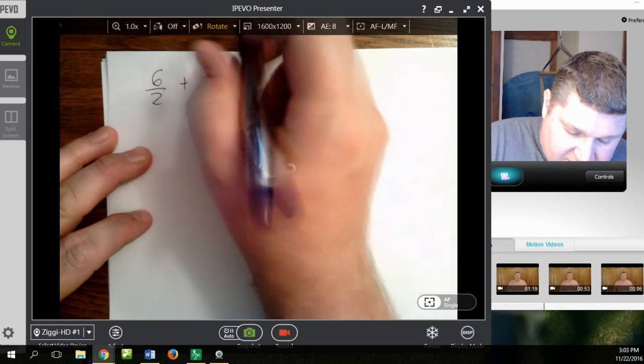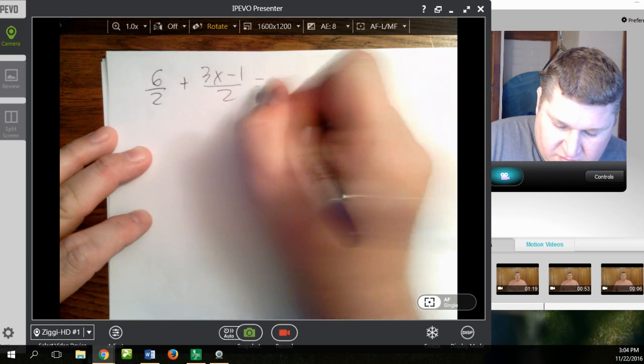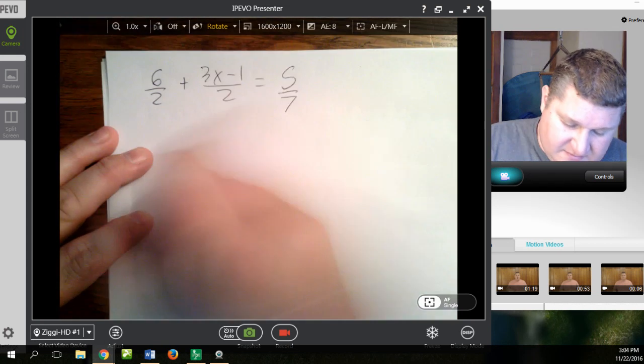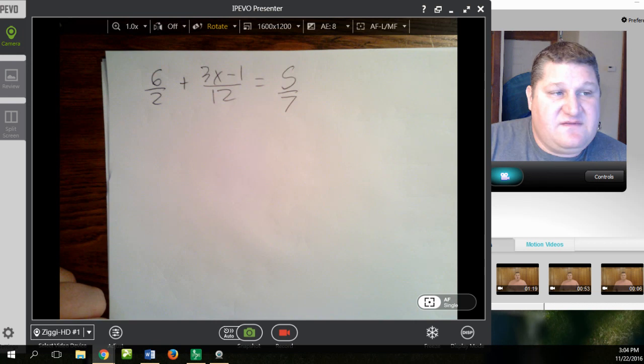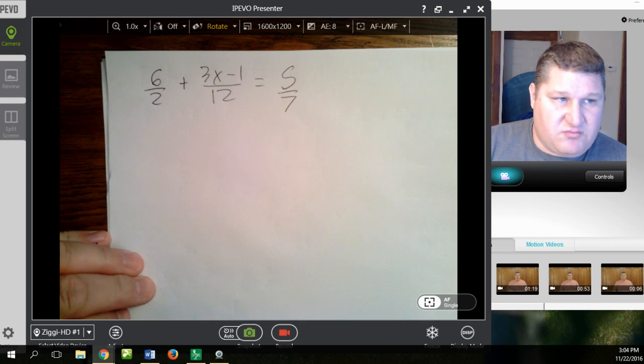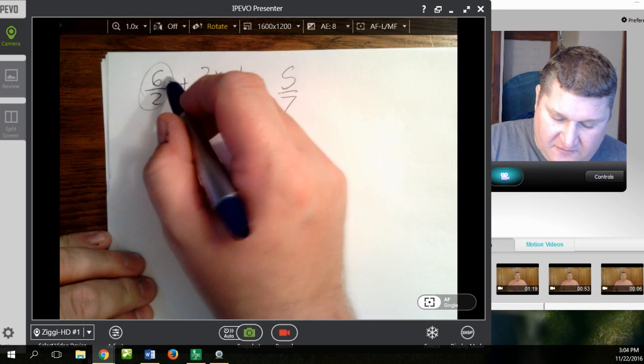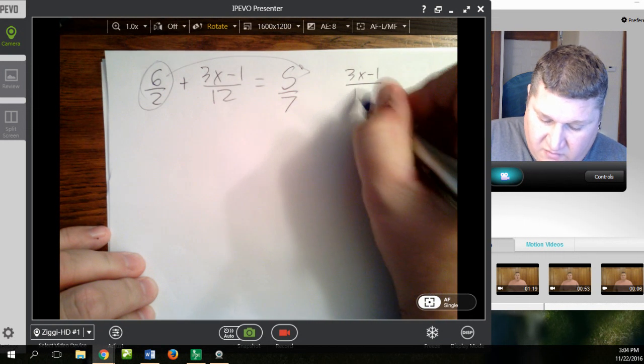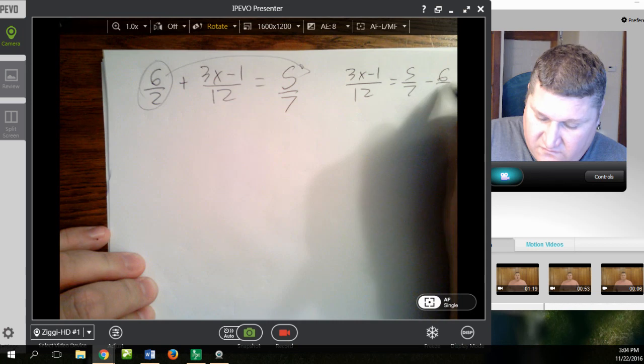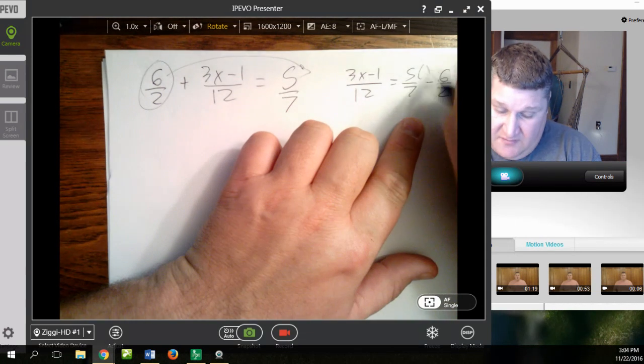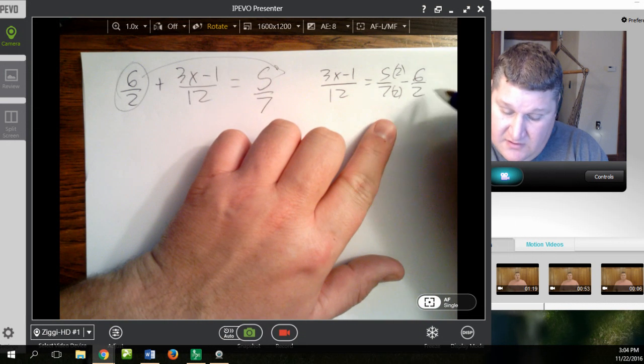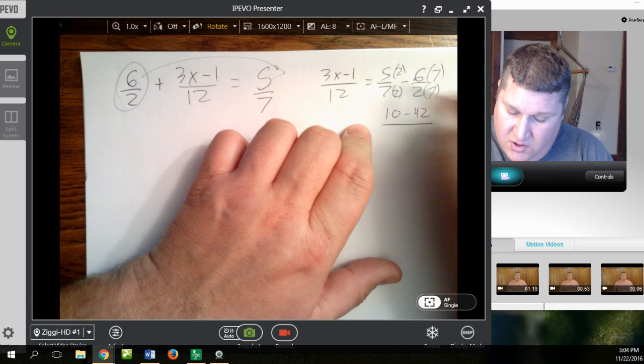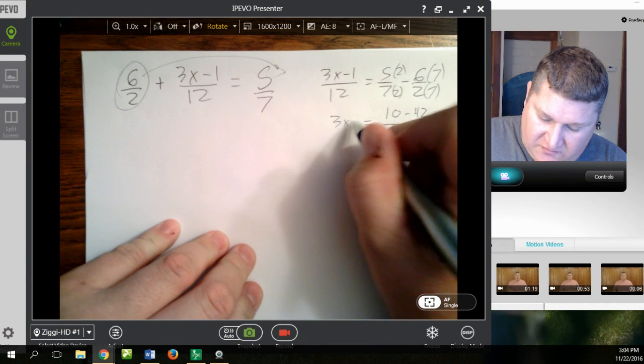6 over 2 plus 3x minus 1 over 2 equals 5 over 7. Here we go. In this case, oh, let's not make that 2. Let's make it 12. Here we go. In this case, I don't have common denominators, but that's not a real challenge. One of two things. Either I can take this fraction and put it over here and find common denominators this way. Okay, 3x minus 1 over 12 equals 5 sevenths minus 6 over 2. And now find common denominators. 2, 2, 7, 7.